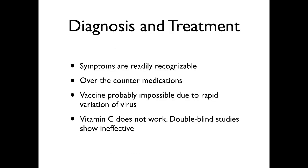Diagnosis and treatment: symptoms are readily recognizable. In fact, in most cases people will mistake other illnesses as colds. There are over-the-counter medications that can lessen the symptoms of the disease. A vaccine is probably impossible due to the rapid variation of the virus, because it is an RNA polymerase that tends to not have an editing function and therefore makes lots of mistakes. Those mistakes cause changes in the protein capsid that then cause your immune system to not recognize it anymore, so you can get colds over and over throughout the years. And vitamin C does not work — double-blind studies have shown that vitamin C is totally, totally ineffective.